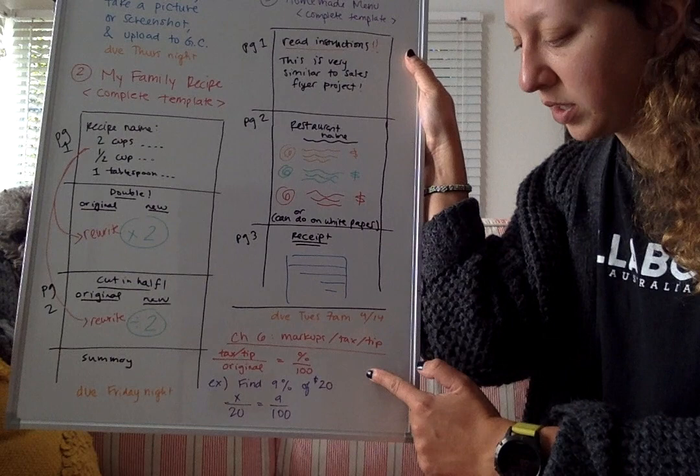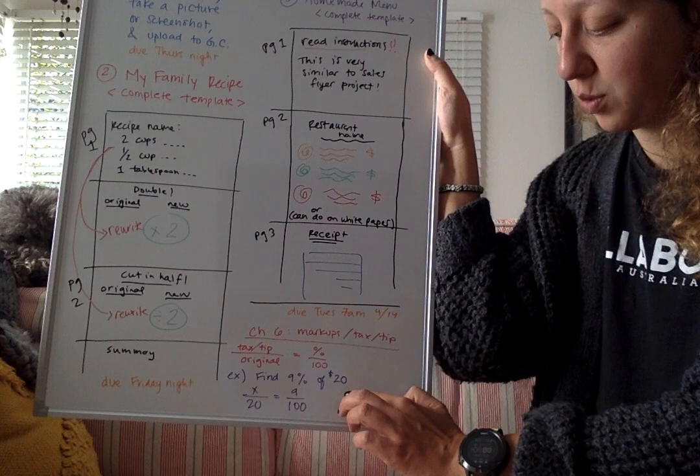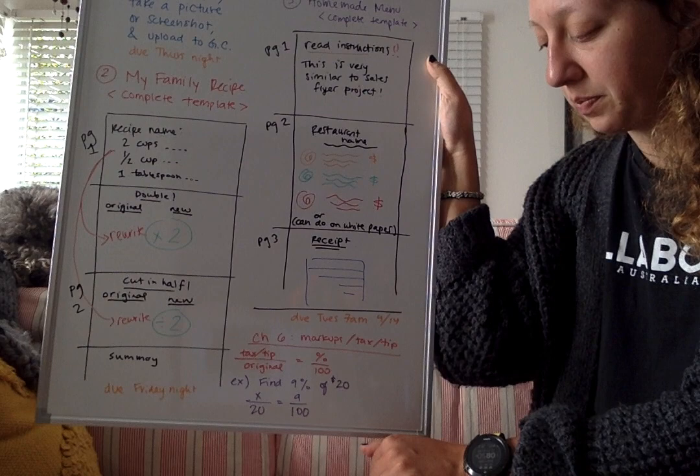So if you're having trouble remembering how to do those calculations, that's from chapter six. Okay, remember we did markups and tax and tip. So remember the 'is' over the 'of', the percent over a hundred. So say you wanted to find nine percent of twenty dollars, like that tip or that tax, you do X over 20, nine over a hundred, and your X would give you that nine percent value out of 20, and that's what your tax would be.